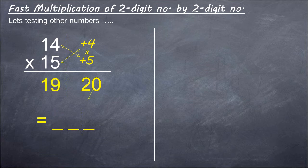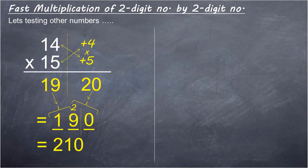20 written as 2, 0. 19 inset here. Summing up, the answer is 210.